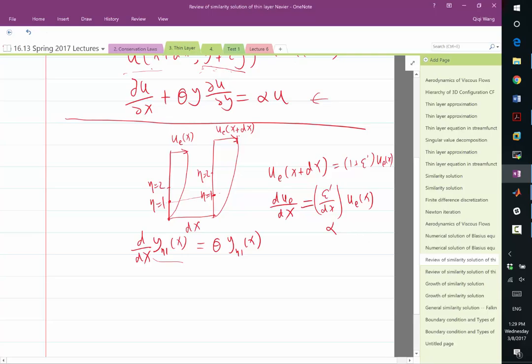but like theta is, if you extrapolate this slope to, so that this goes back to the wall, then 1 over theta would be the distance from the x location to where these two lines would meet. Make sense?